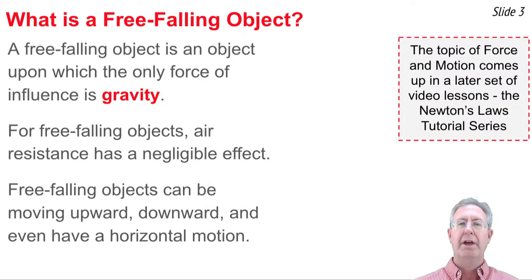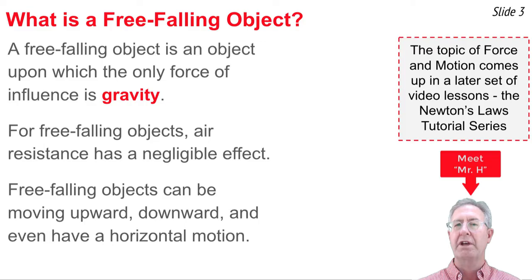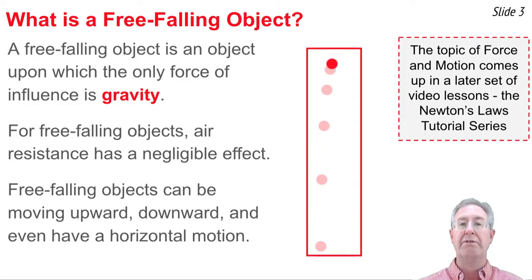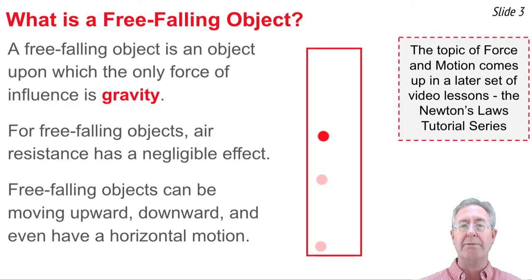A free falling object is an object that is falling under the sole influence of gravity. If there's air resistance, it's so small it has a negligible effect, such that we could say gravity is the only force of influence. Free falling objects could be moving downwards, or moving upwards and then subsequently falling downwards, or even have a horizontal motion amidst their falling motion. Whatever the case, free falling objects are under the sole influence of gravity.